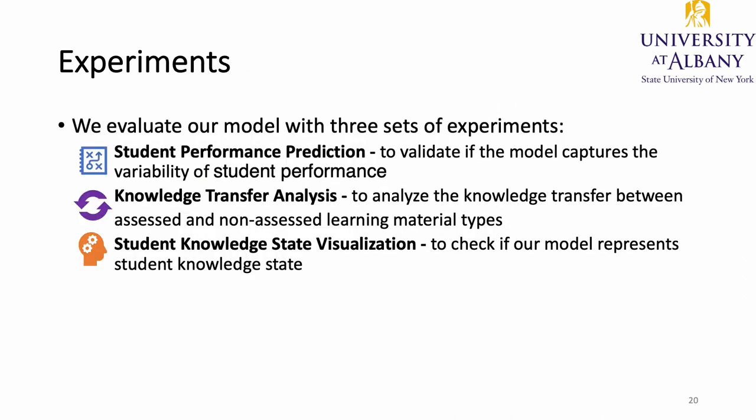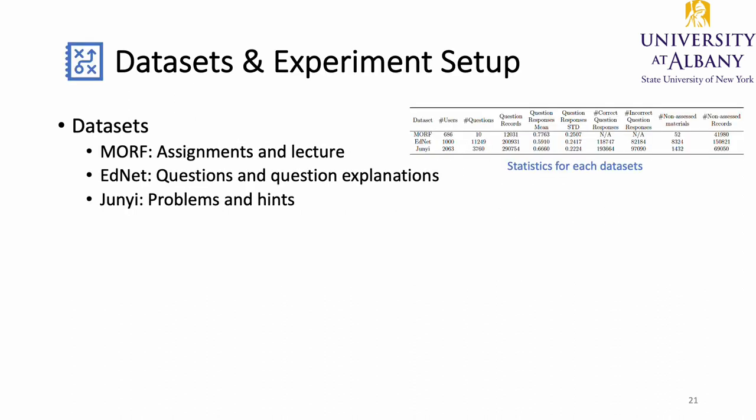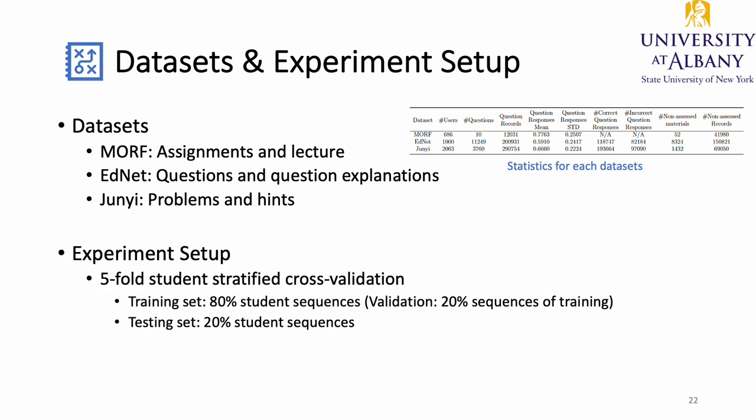We have three kinds of experiments to evaluate our model: student performance prediction, student knowledge transfer analysis, and student knowledge state visualization. We use three datasets. The first, Morph, is from one online course on the Morph platform, using assignments and lectures. AetNet is a dataset for Korean students preparing for TOEIC English testing, using questions and question explanations. JunYi is collected from a Chinese e-learning website for mathematics, using problems and problem hints. We do five-fold stratified cross-validation, with 80% of students for training and 20% for testing.